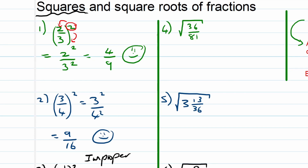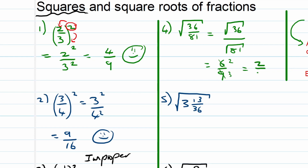Now let's move over to square roots. The same rules apply: you take the square root of the numerator over the square root of the denominator, then apply it separately. The square root of 36 is 6, and the square root of 81 is 9. We have 3 as a common factor: 3 goes into 6 twice and into 9 three times, so this simplifies to 2 over 3.